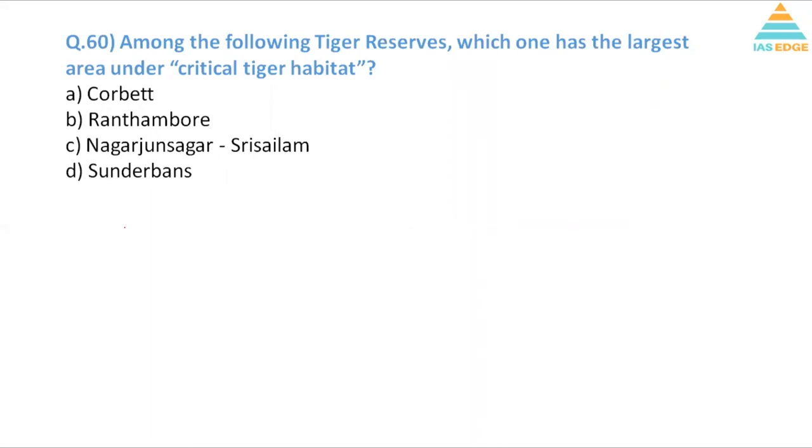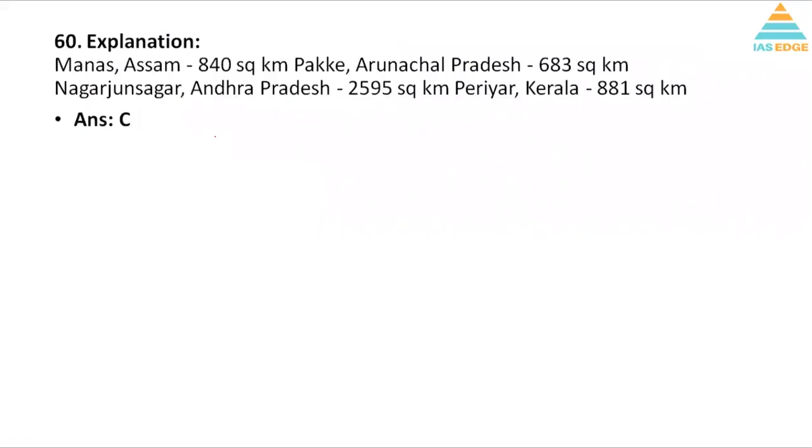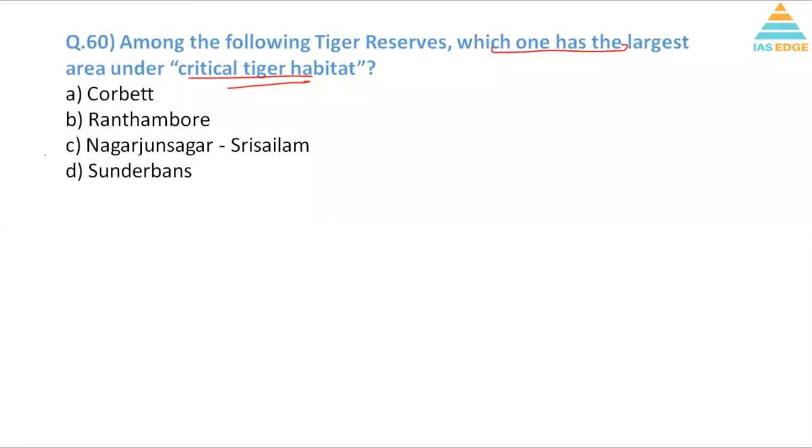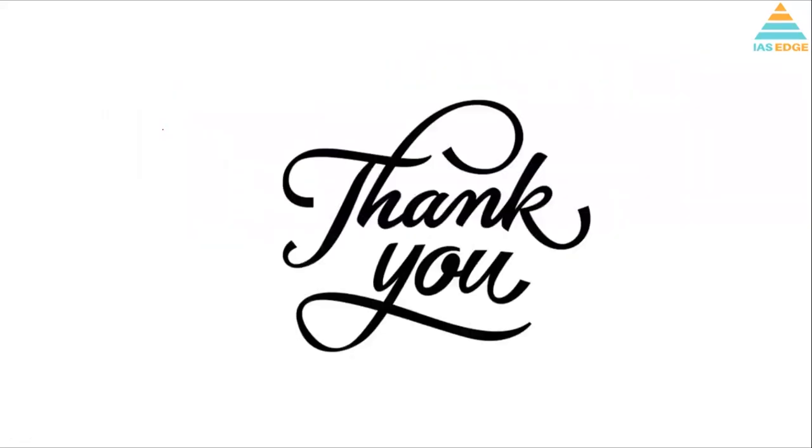Question number 60, again a factual question. Among the following tiger reserves, which has the largest area under critical tiger habitat? Actually the answer is factual - C, because in Assam Manas it has less natural habitat, but Nagarjuna Sagar has high area under tiger habitat. So this is the right answer, a factual question. Again these questions are very typical - remember, these are factual. Only if you know you can solve them, otherwise you can skip them. Okay, so thank you very much. Bye.